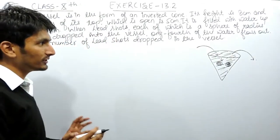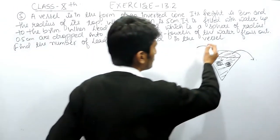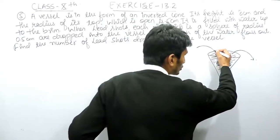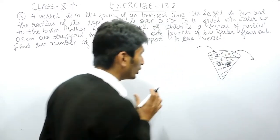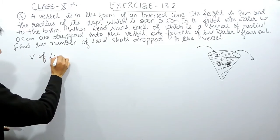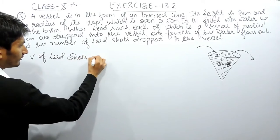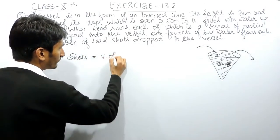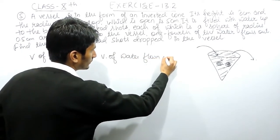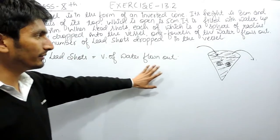So, by Archimedes' principle, one thing is very clear: the lead shots that are put into this vessel — the volume of those lead shots — will be equal to the volume of water flowed out. This is established with the help of Archimedes' principle.